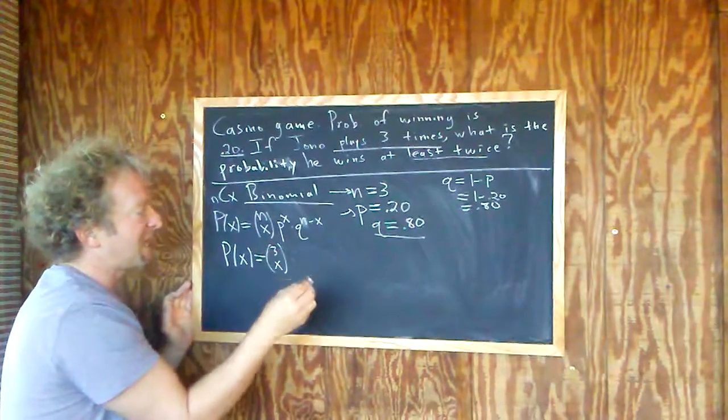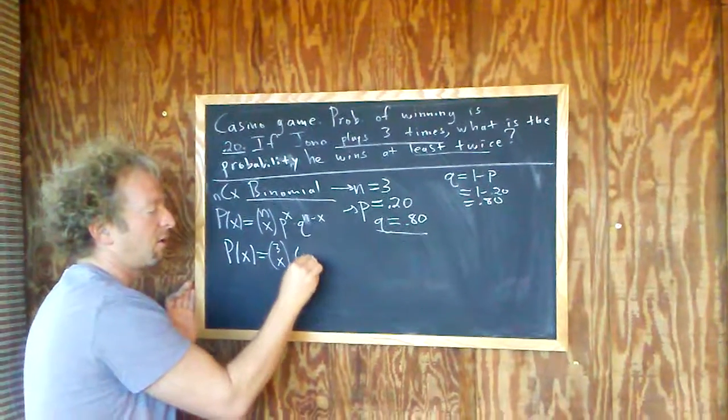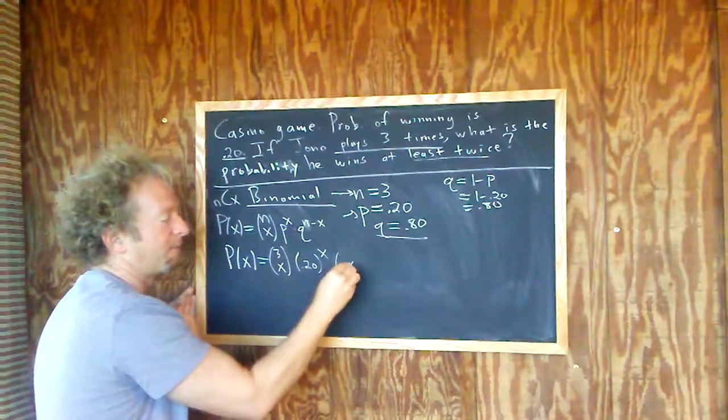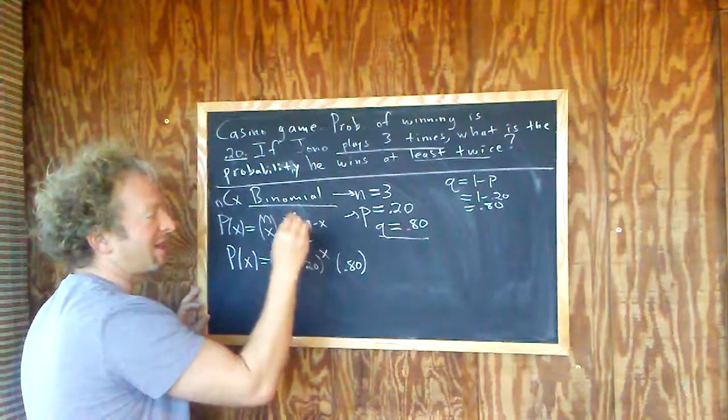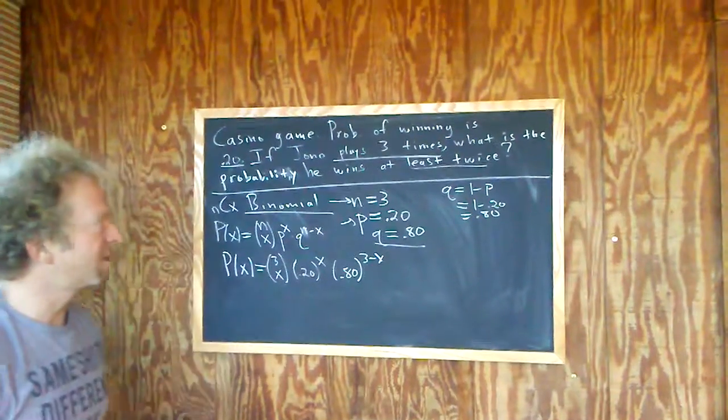So three choose X. P is 0.2. So 0.20 to the X. And Q is 0.8. So 0.80 to the, well, N is three. So three minus X. Okay. So that's the formula.